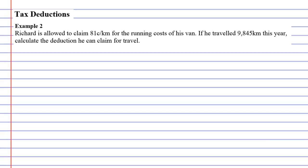Tax deductions, example two. Richard is allowed to claim 81 cents per kilometer for the running cost of his van. If he traveled 9,845 kilometers this year, calculate the deduction he can claim for travel.